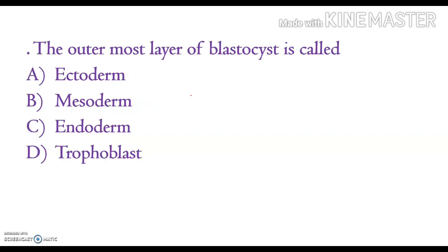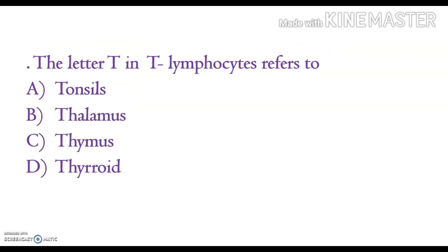The outermost layer of a blastocyst is called: endoderm, ectoderm, mesoderm, endoderm, or trophoblast. The correct answer is option T, trophoblast. The next question: the letter T in T-lymphocytes refers to tonsils, thalamus, thymus, or thyroid.